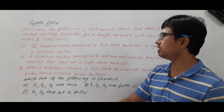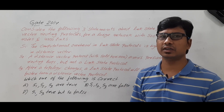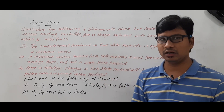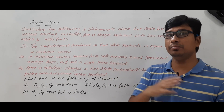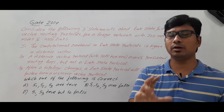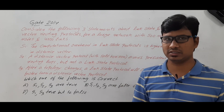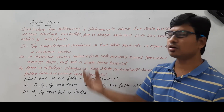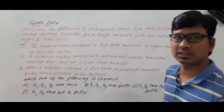Let me discuss statement S1: the computational overhead in link state protocol is higher than in distance vector. In distance vector, only the distance vector table is forwarded to its neighbors — that's why we call it a local knowledge algorithm. In link state protocol, information is flooded across the entire network, so all nodes come to know about your routing table. Sending to everyone using flooding is obviously more computationally expensive. So statement S1 is correct.